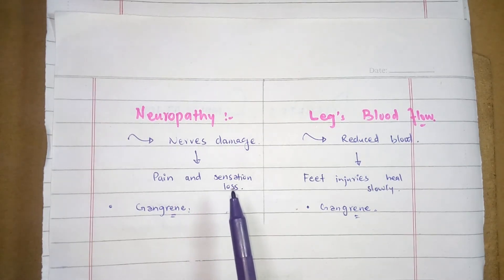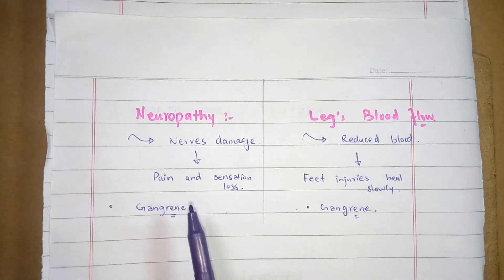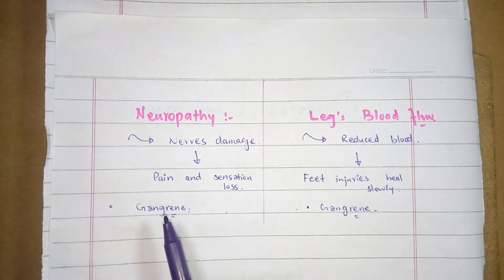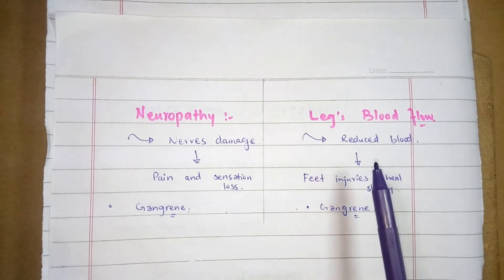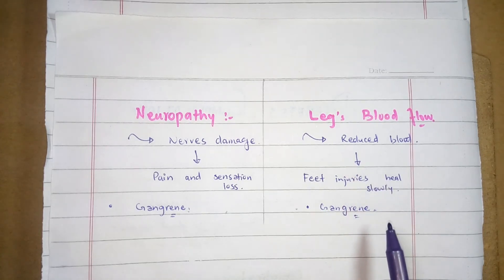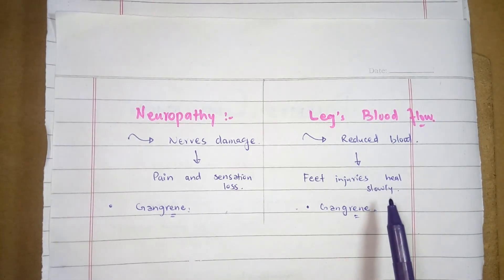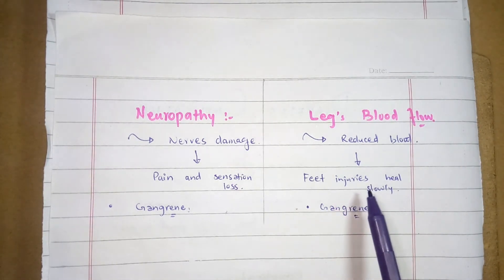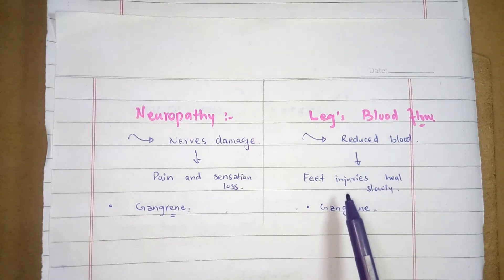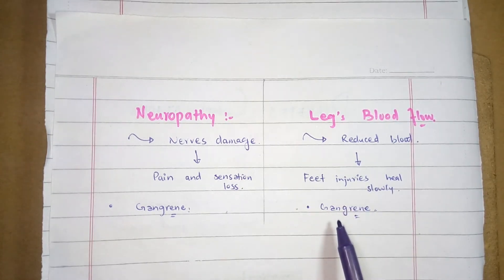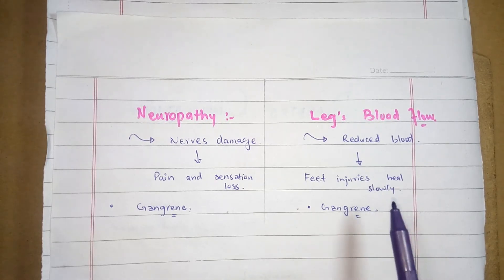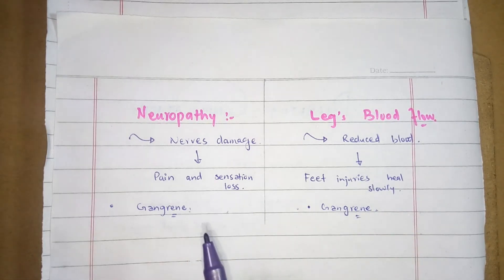The sensation loss is called numbness. Foot wounds may not be detected, leading to gangrene. In the case of macrovascular complications, there is reduced blood flow in the legs — blood vessels may become narrow, causing the legs to lack blood flow. Foot wounds may heal slowly and this may also lead to gangrene. These are the complications of microvascular and macrovascular diabetes. Thank you very much.